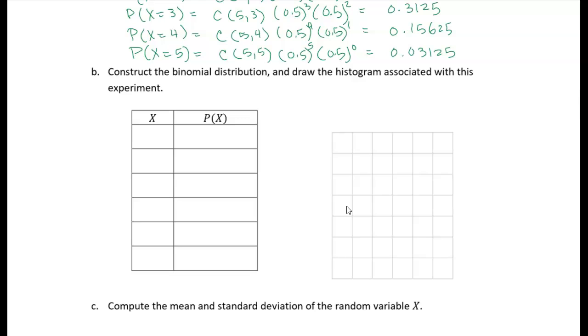So my outcomes are 0, 1, 2, 3, 4, and 5. And my probabilities, I can just copy from what I have above.